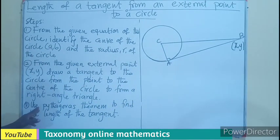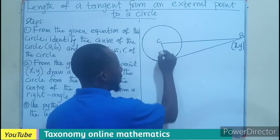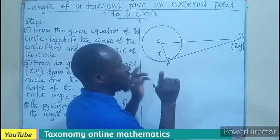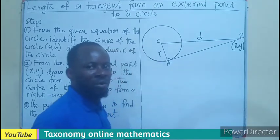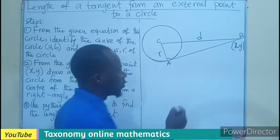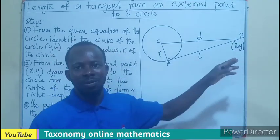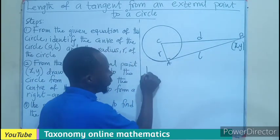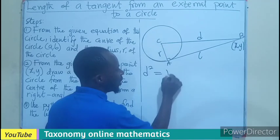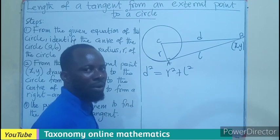Now, finding the length, we are going to use the Pythagoras theorem to find the length of the tangent. Simply put, if we indicate here as our radius R, the distance between the center and the external point, let's use D. We are looking for the length, so let's use L to represent the length of this tangent. By Pythagoras theorem, the longest side squared, which is D squared, equals the sum of the two shorter sides.